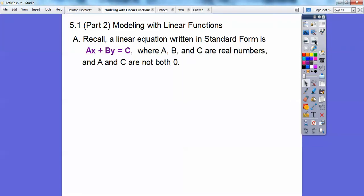Recall a linear equation in standard form is AX plus BY equals C. A, B, and C are real numbers, and both of them can't be zero. One of them can be zero, but not both of them.